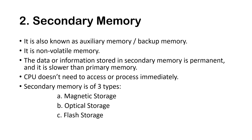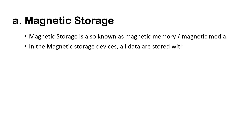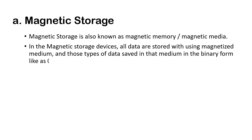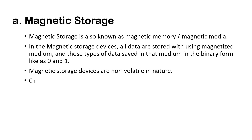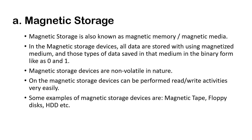Secondary memory is of three types: magnetic storage, optical storage, and flash storage. Magnetic storage is also known as magnetic memory or magnetic media. Data in magnetic storage devices is stored using a magnetized medium in binary form, as zeros and ones. Magnetic storage devices are non-volatile, and read or write activities can be performed very easily. Some examples are magnetic tape, floppy disks, and HDD.